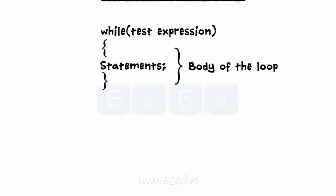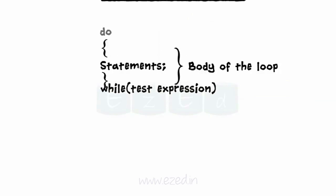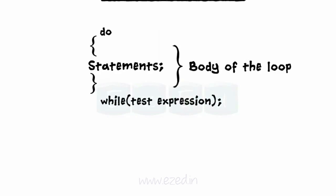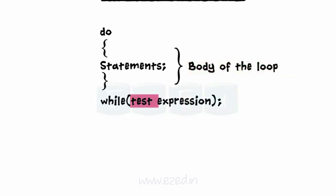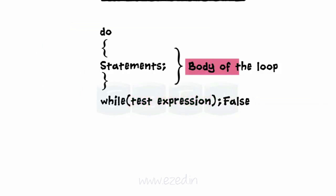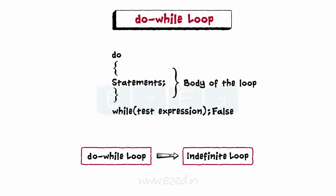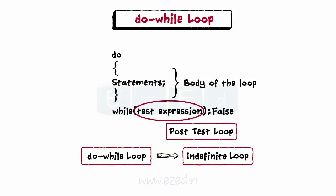Let's move on to studying the next loop: do-while. Do-while is just like a while loop except the test condition is checked at the end of the loop rather than the start. This has the effect that the content of the loop is always executed at least once. The loop is executed at least once and then the test condition is evaluated. If it is true, then the block of statements are executed again. Till the result of evaluation turns out to be false, all the statements are executed. As soon as the result is false, the statements exactly after the loop block are executed. Do-while loop is considered an indefinite loop and a post-test loop since the test expression is tested at the end of the loop.